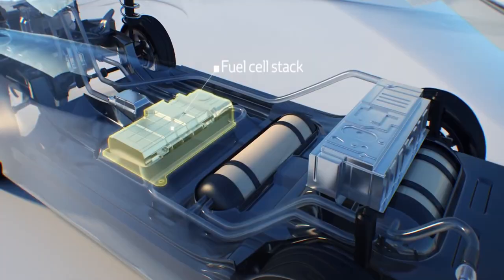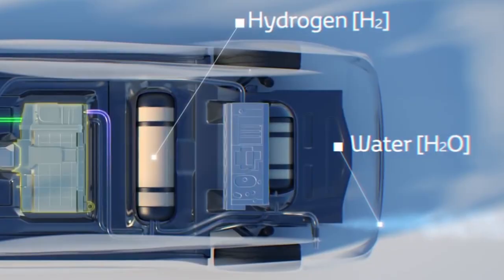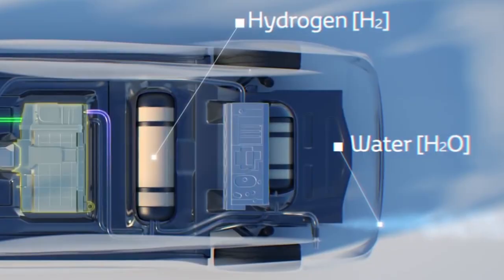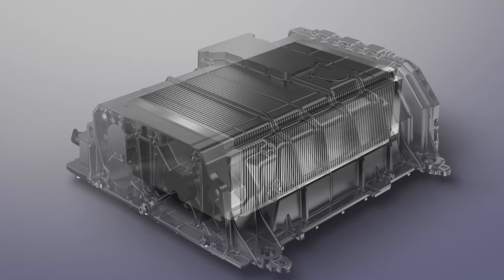When you put your foot on the accelerator, electricity from the fuel cell system is sent to the motor, leaving nothing but water. In the end, the only byproduct of creating electricity with hydrogen and oxygen in our fuel cell system is water, which leaves through a hatch located on the bottom of the Mirai.